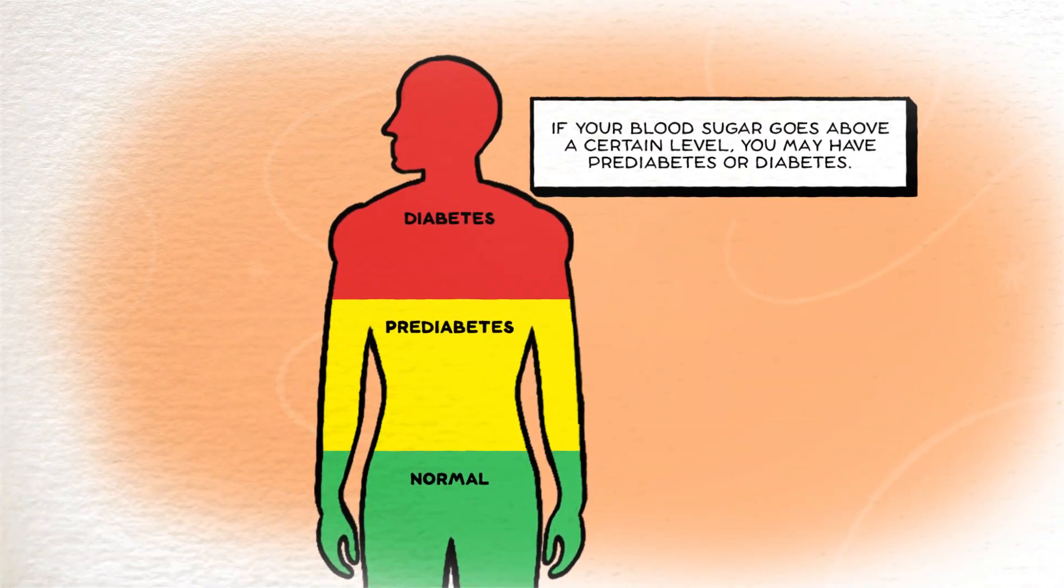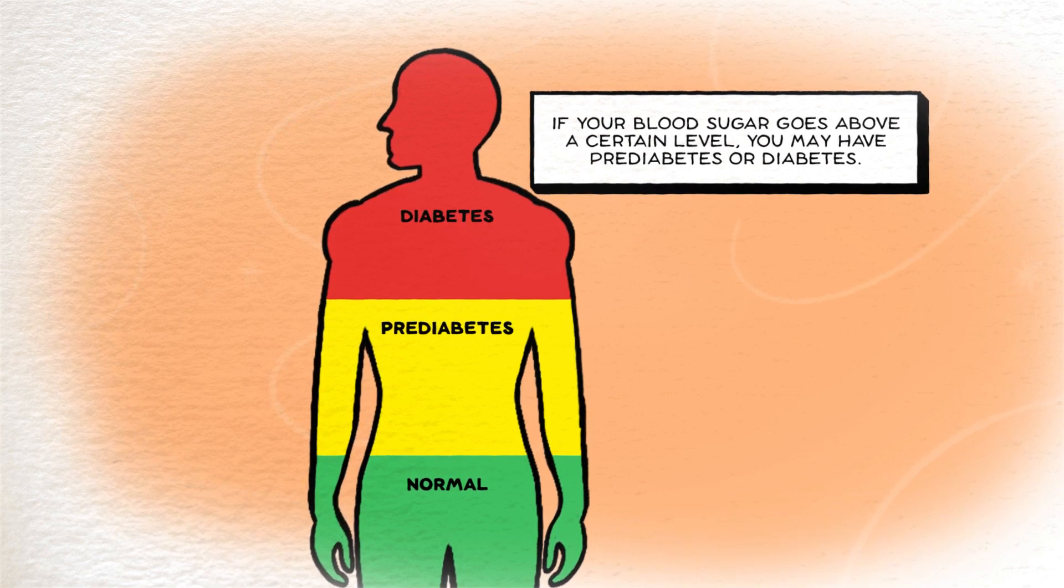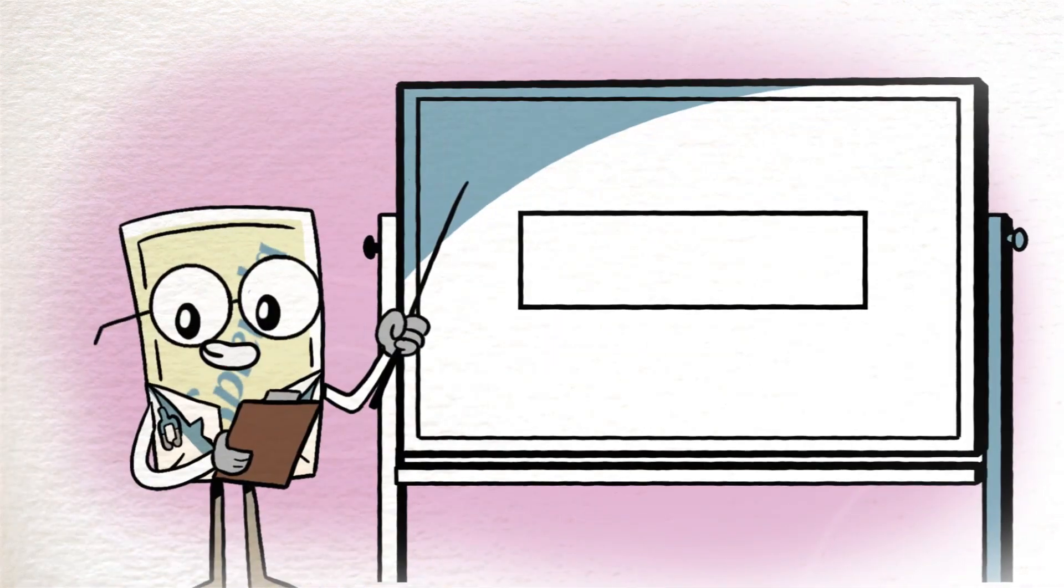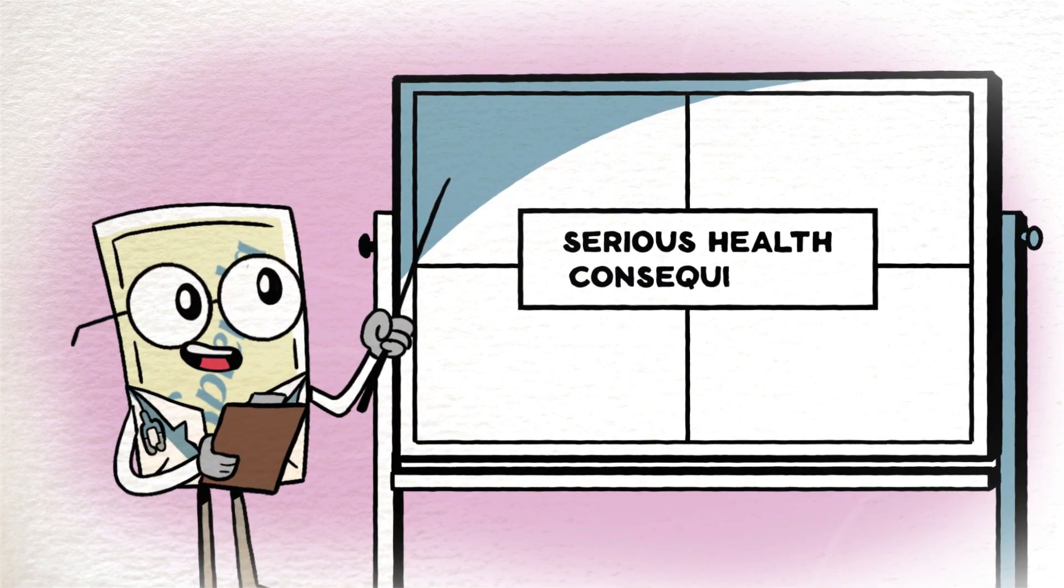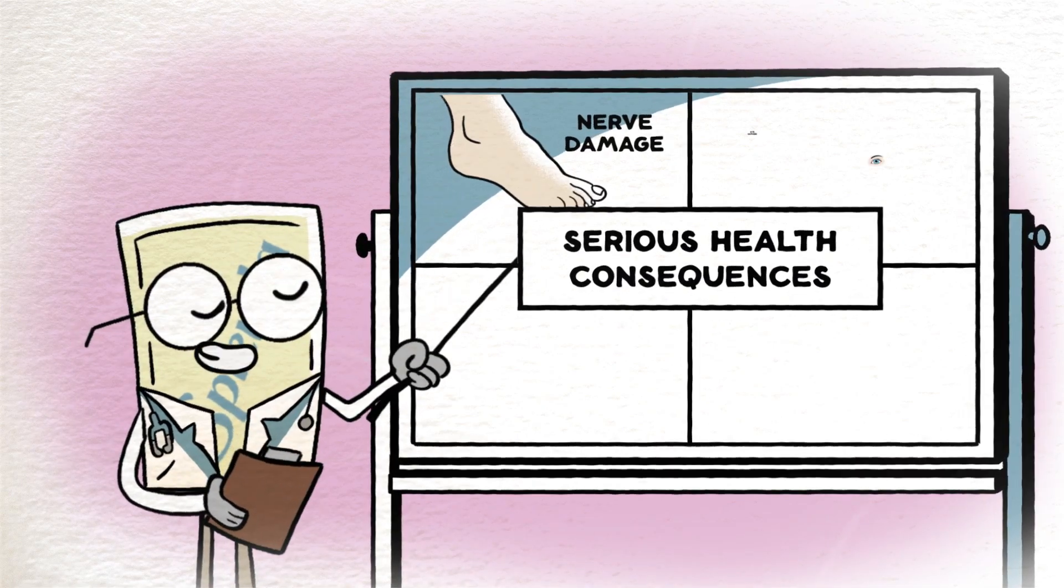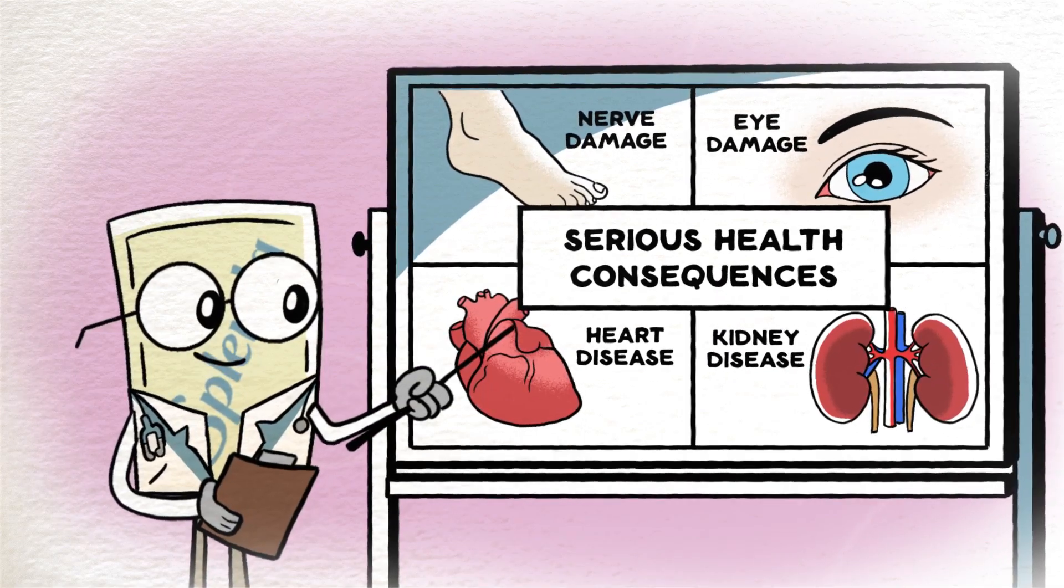If your blood sugar goes above a certain level, you may have prediabetes or diabetes. It's important to manage your blood sugar as it can lead to serious health consequences like nerve damage, eye damage, heart disease, and kidney disease.